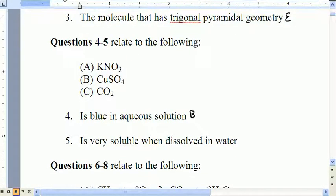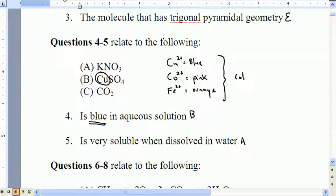Blue in aqueous solution, that's going to be B and very soluble A. The reason B is the answer for 4 is we have something colored, and we know transition metals are colored. Cu2+ is going to be blue. But if I had Co2+, that would be pink. And Fe2+ is going to give us orange. But in general, focus on the fact that all of these are colored. Very soluble in water is A, because K+ is an alkali metal, and NO3- is a nitrate. If we were making a battery out of this, this would be the component of the salt bridge.